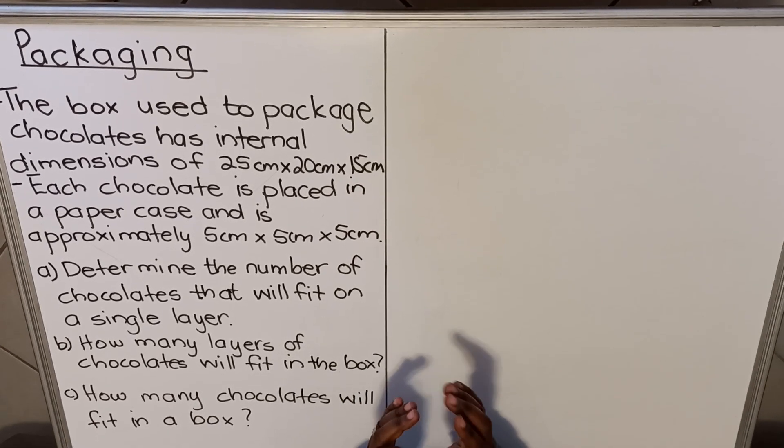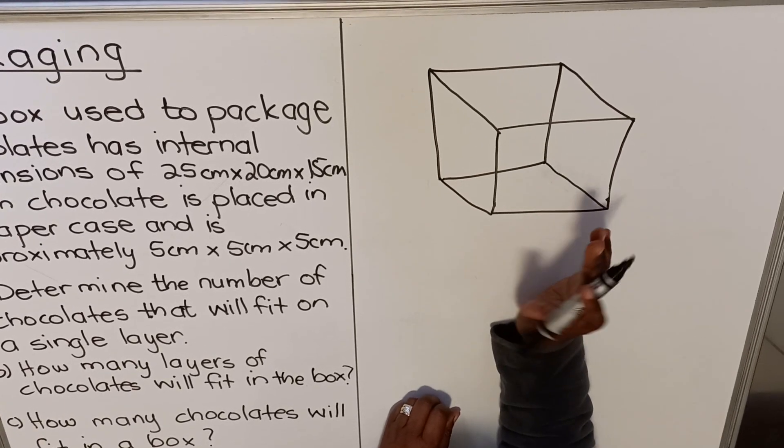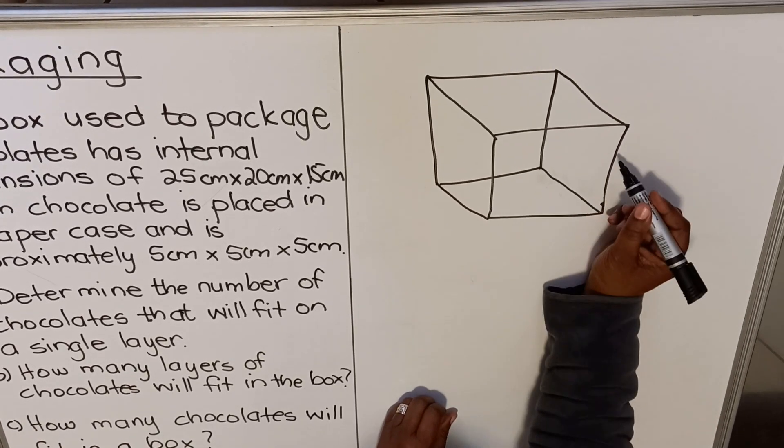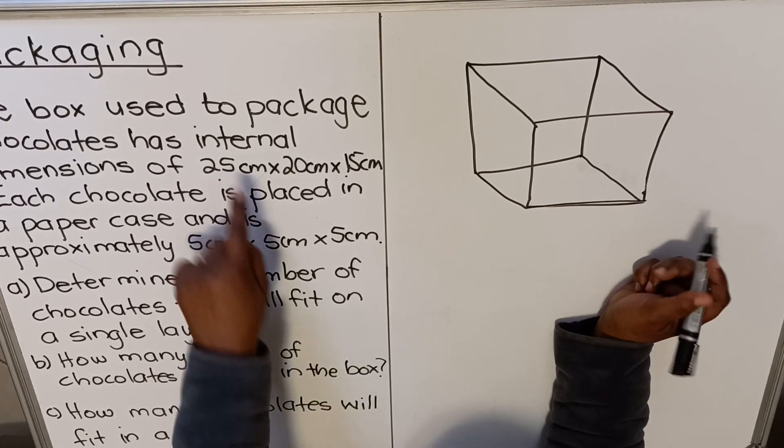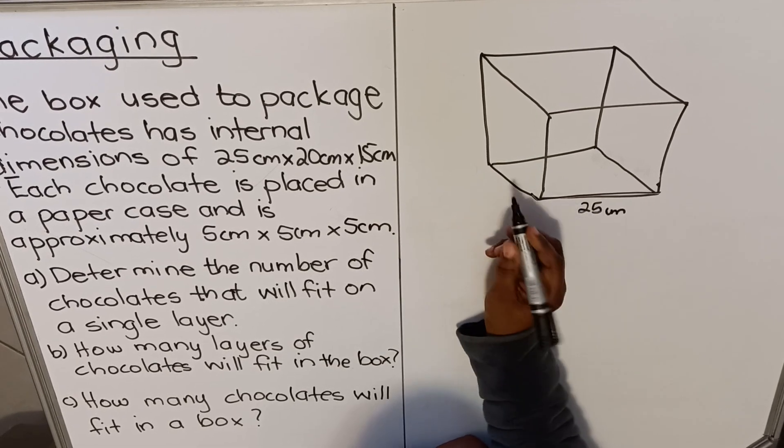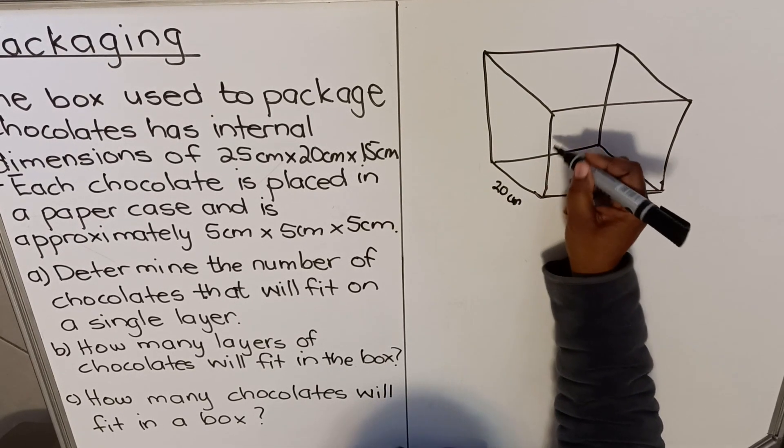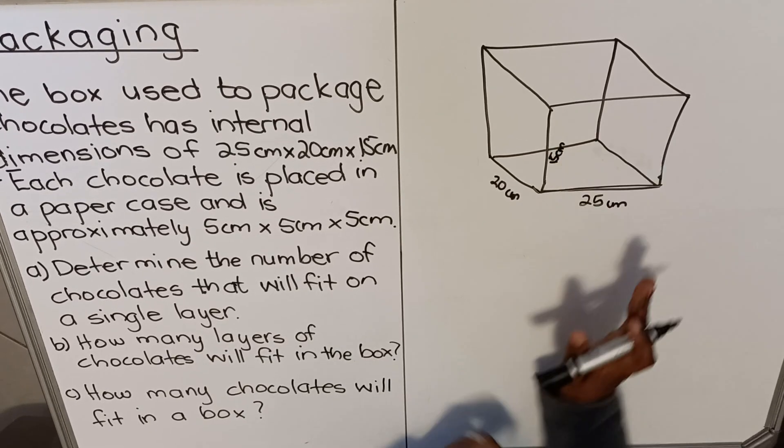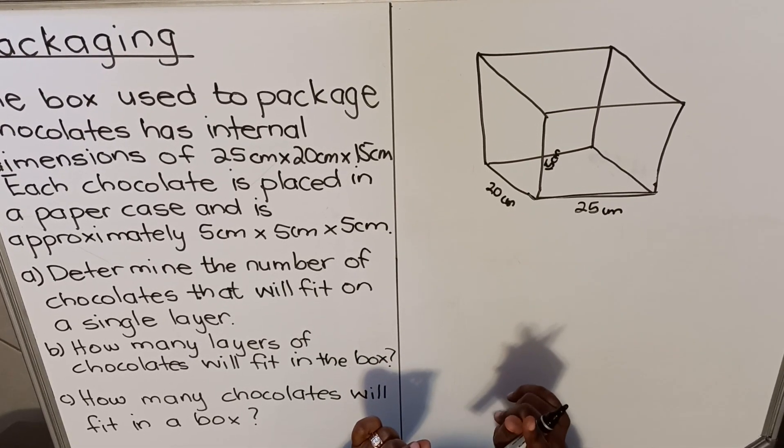This big box is the one that you're gonna pack in. It's not drawn up to scale. This is your length, that's the first dimension, they say it's 25 centimeters. And then this is your width or your breadth, it's 20 centimeters. And your height is 15 centimeters. So this is the bigger box where you're gonna pack inside.